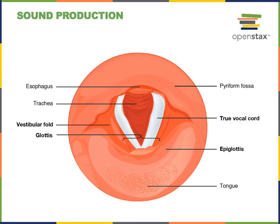Sound production for speech is another major function of the respiratory system. In the larynx, there are vocal cords that are elastic ligaments which vibrate as air is forced between these bands of elastic connective tissue. That vibration creates the sound that we use for speech.